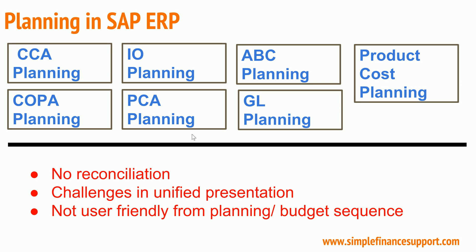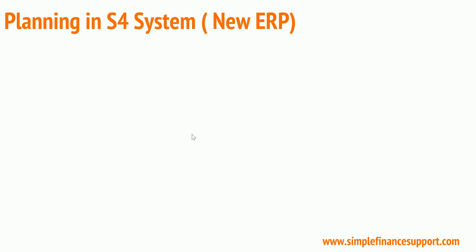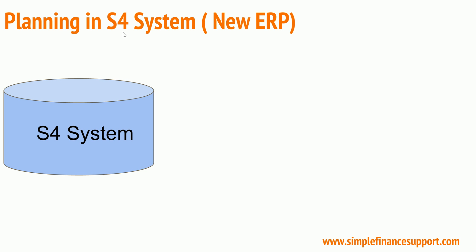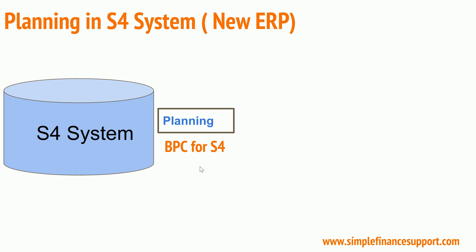Going forward to S4 — the new SAP system, where S4 stands for Simple 4th Generation — everything is simplified, including the data structures. In S4, universal journal-type tables are part of the system. You perform planning directly on the S4 system, and pretty much use the Business Planning and Consolidation, or BPC, application framework.